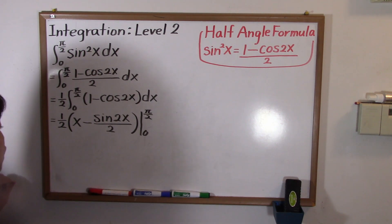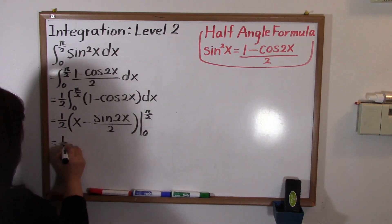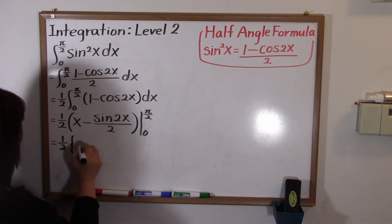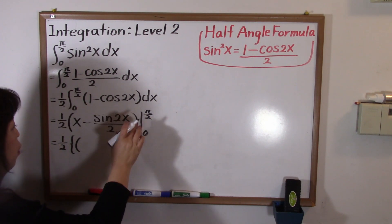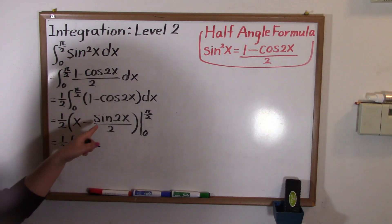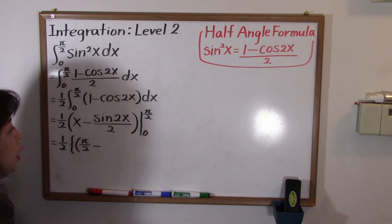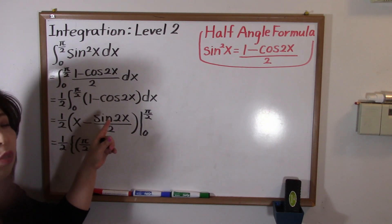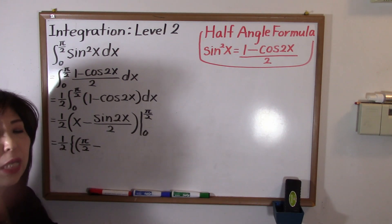We find the value of the expression when x equals pi over two first. So we open a bracket and plug in pi over two: that gives pi over two, minus sine of two times pi over two over two.